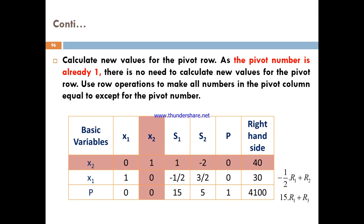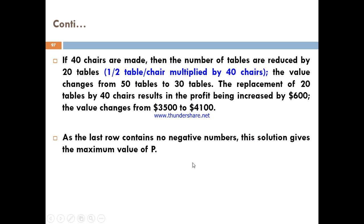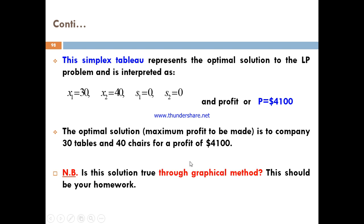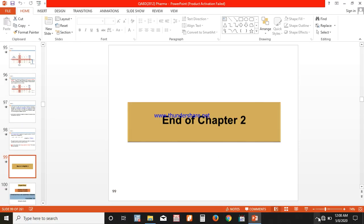After these row operations, the final tableau is now optimal because there is no negative value in the last row. An optimal solution is found: x1 equals 30 (tables) and x2 equals 40 (chairs), and the company will sustain a profit of $4100. This is the end of chapter 2.